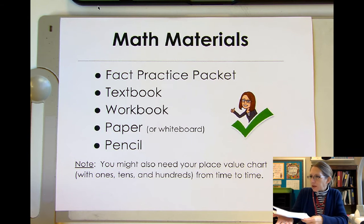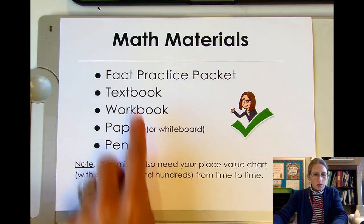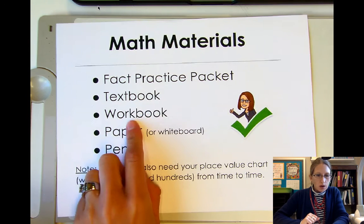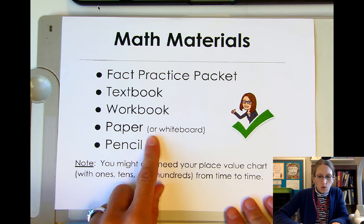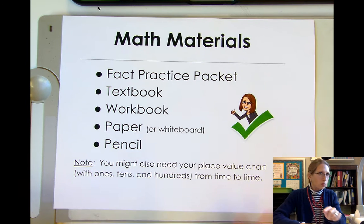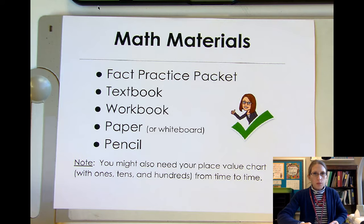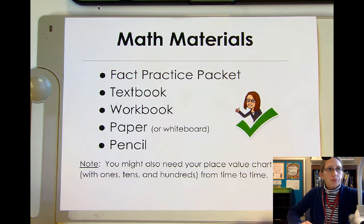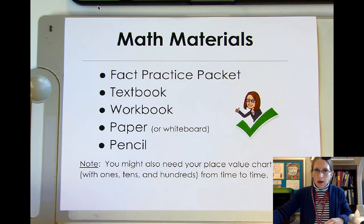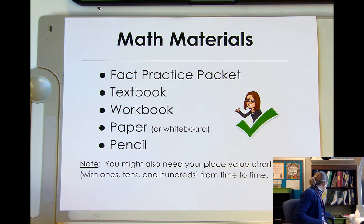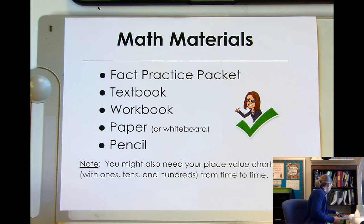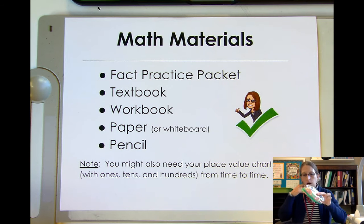Do we have our textbook? Check, I got my textbook here. Workbook, paper, or whiteboard. I got my whiteboard here. And a pencil and a whiteboard marker. We might need our place value chart today — our ones, tens, and hundreds pieces.